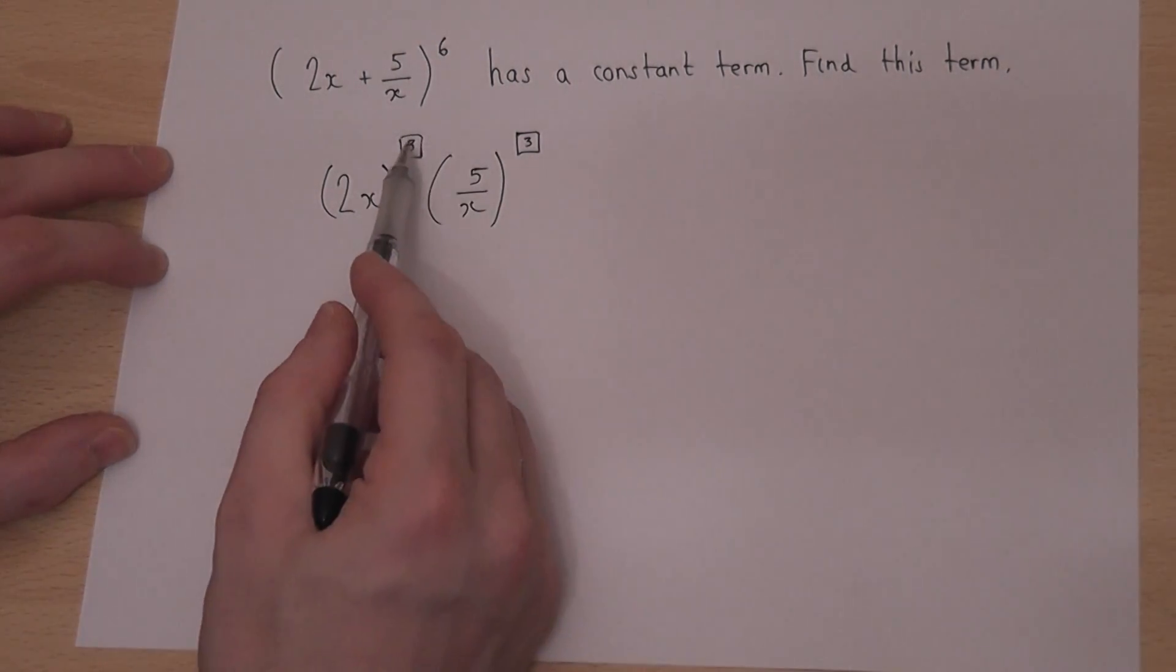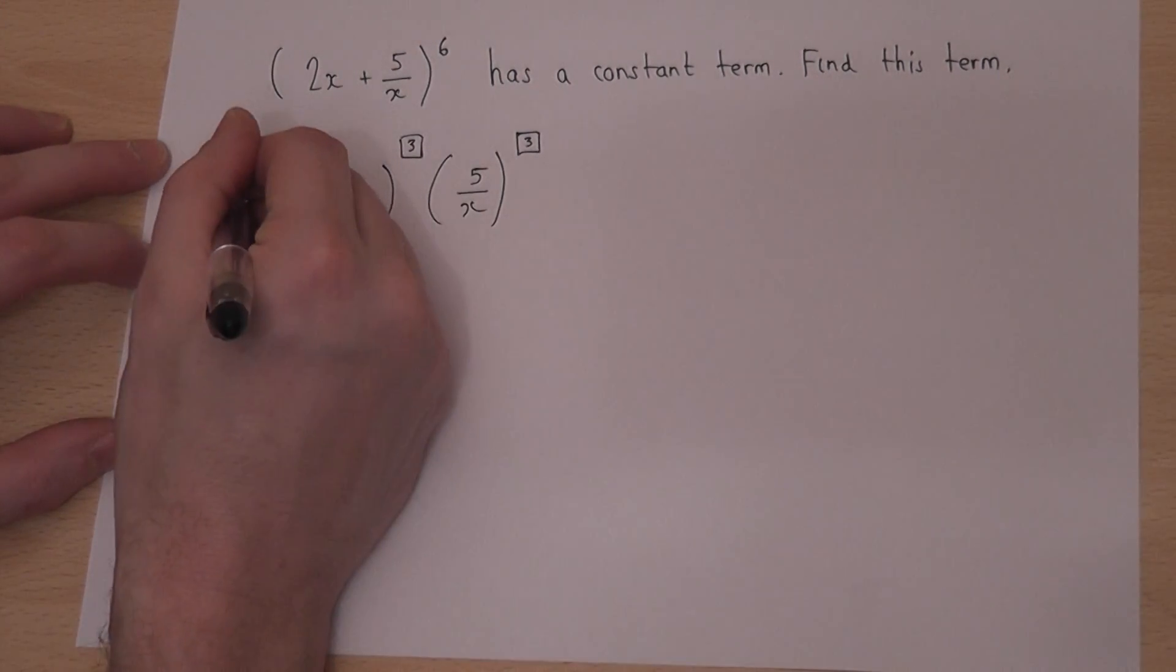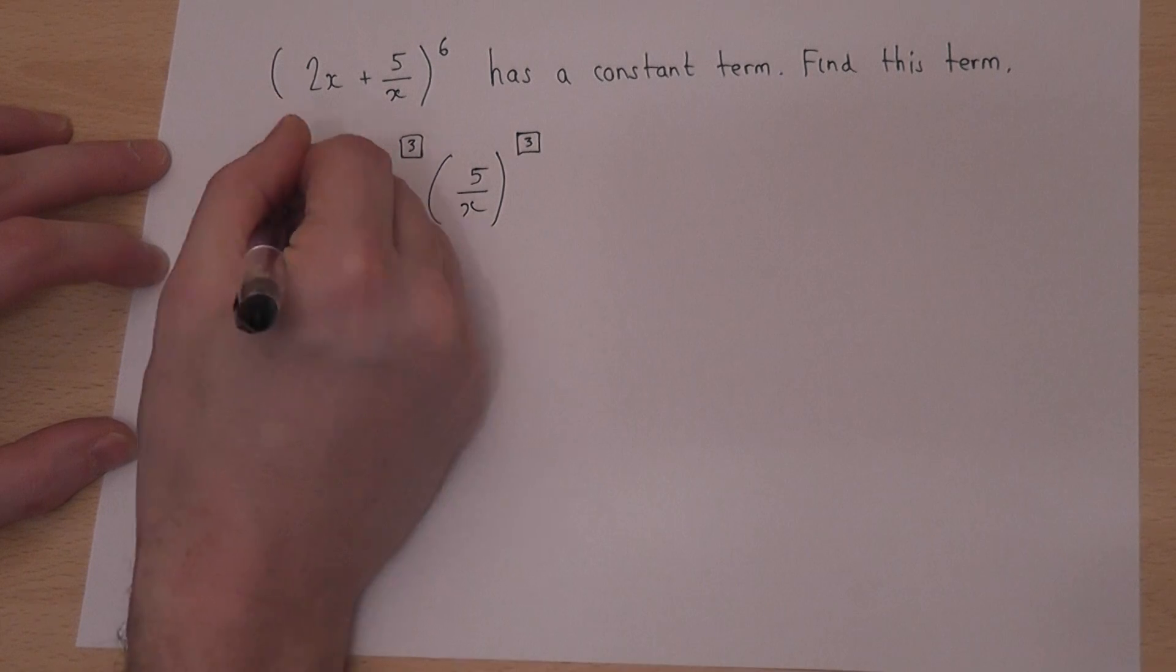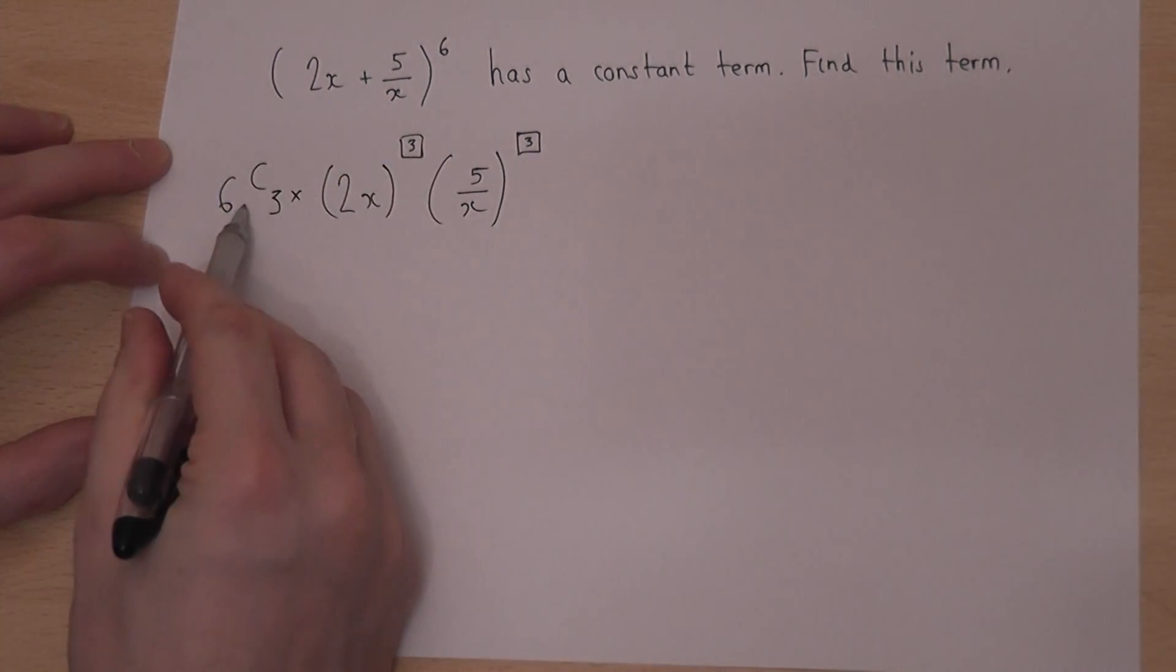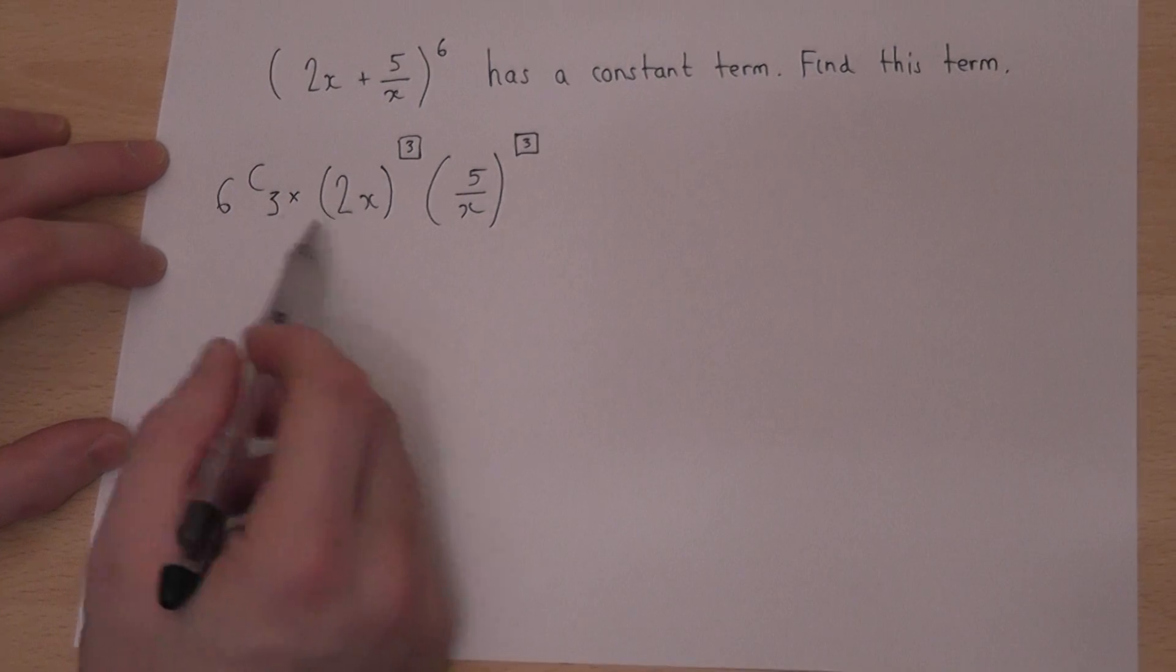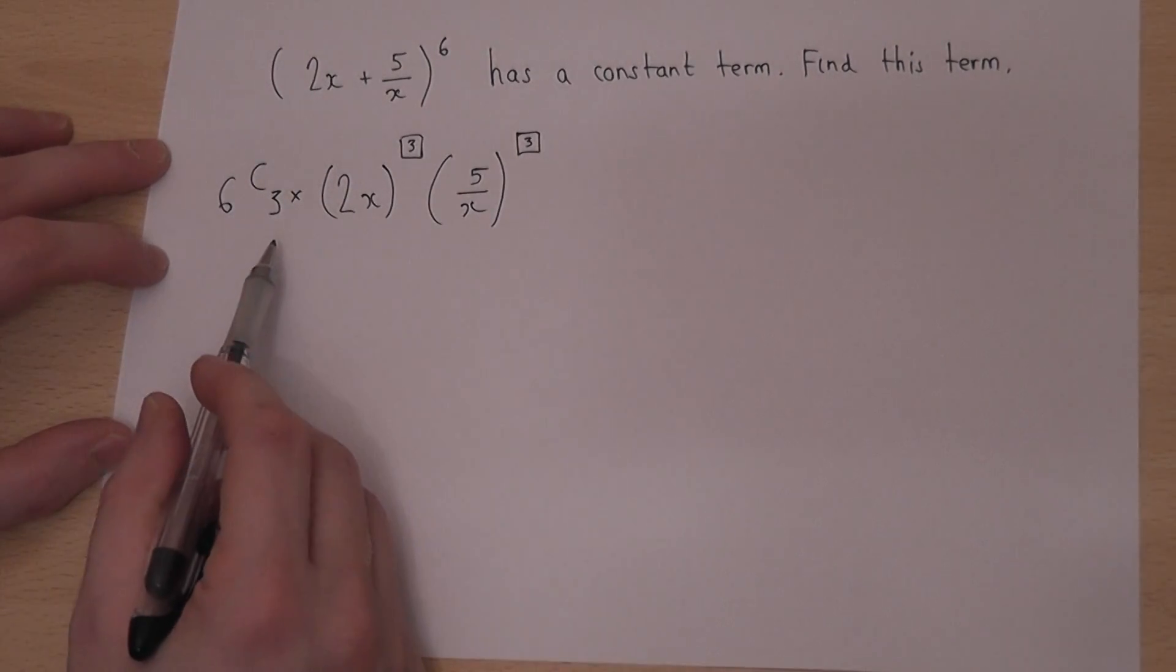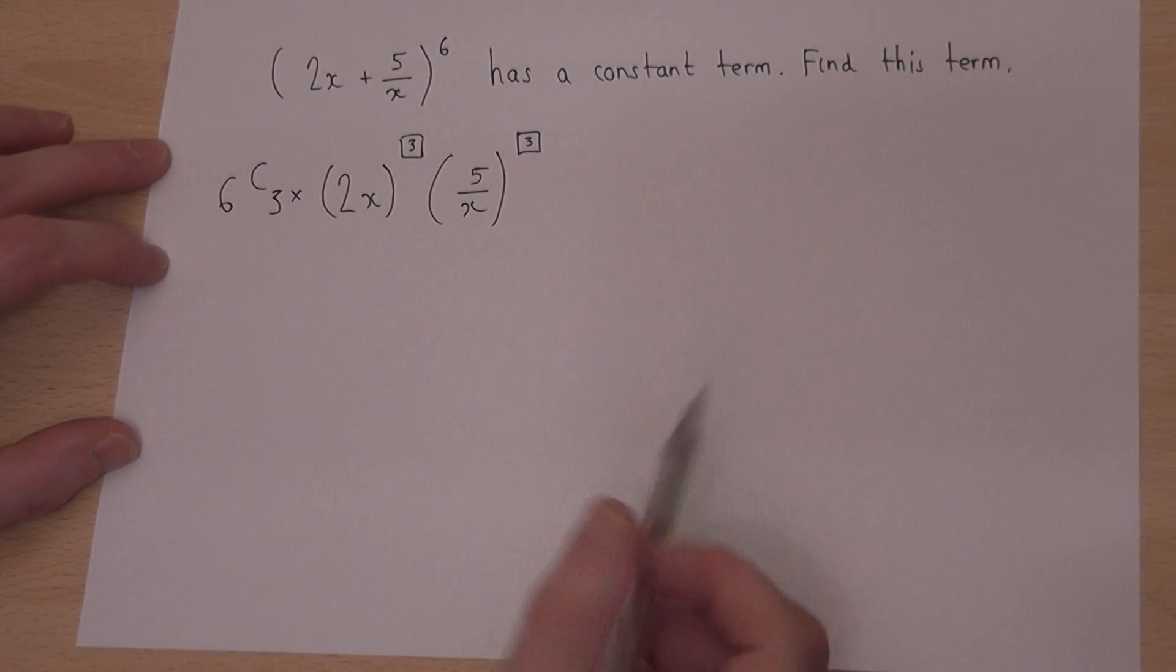However, because we've used the power of 3, there will also be the Pascal's triangle coefficient, which is 6C3. So when we work all this out, this will be just a number, as you'll find out.